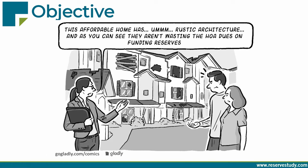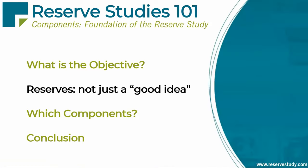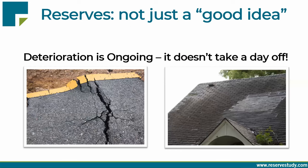Reserve planning — all this talk about components — is just theory until it affects board decisions, and not just board decisions but management's encouragement and support of the board to make good decisions. Now that you know the objective of taking good care of the common areas, I want to drive home that point with a focus on other factors influencing board behavior — areas where the board does not have a choice — and that has to do with deterioration.